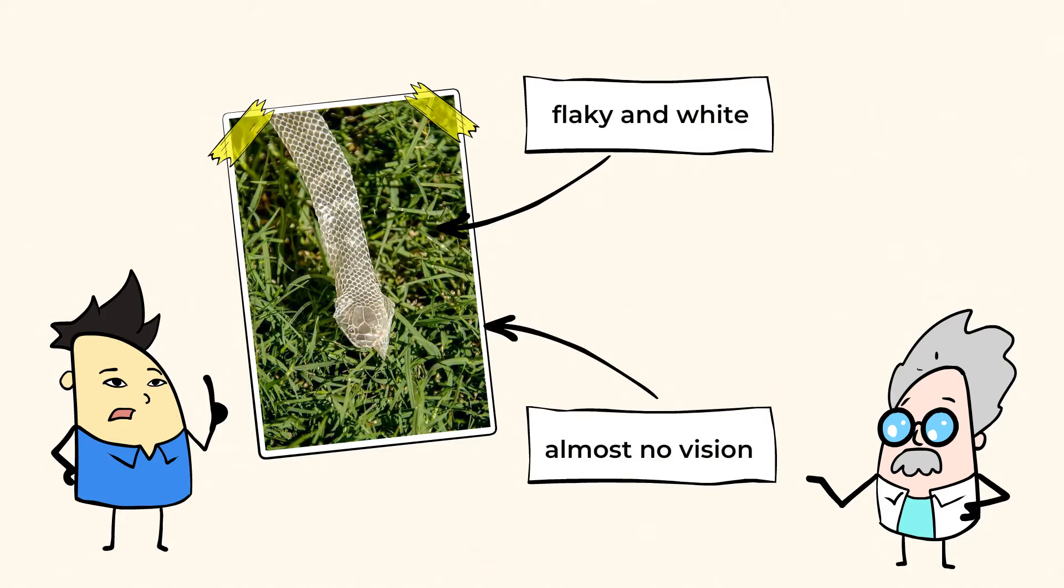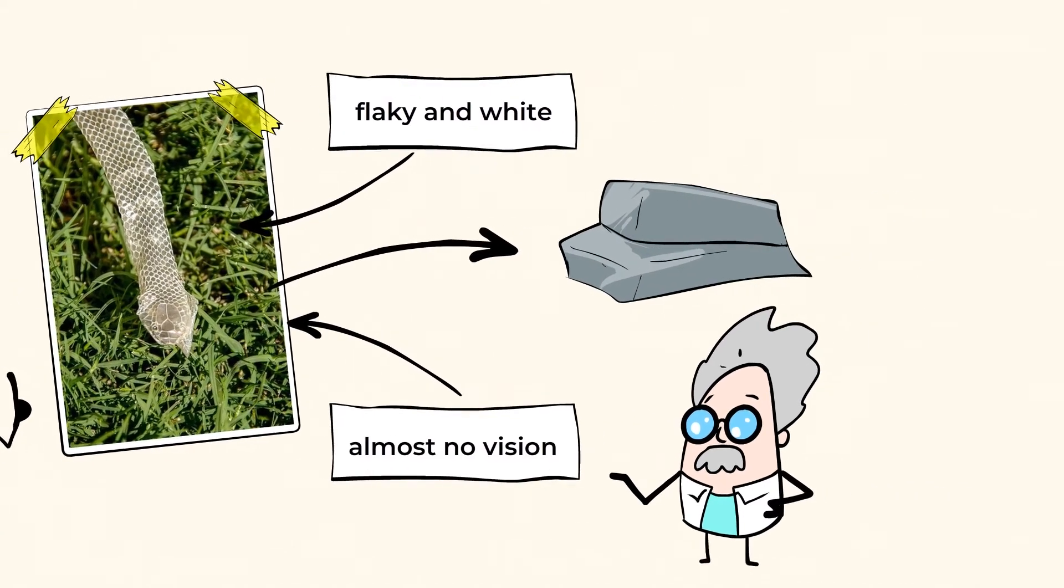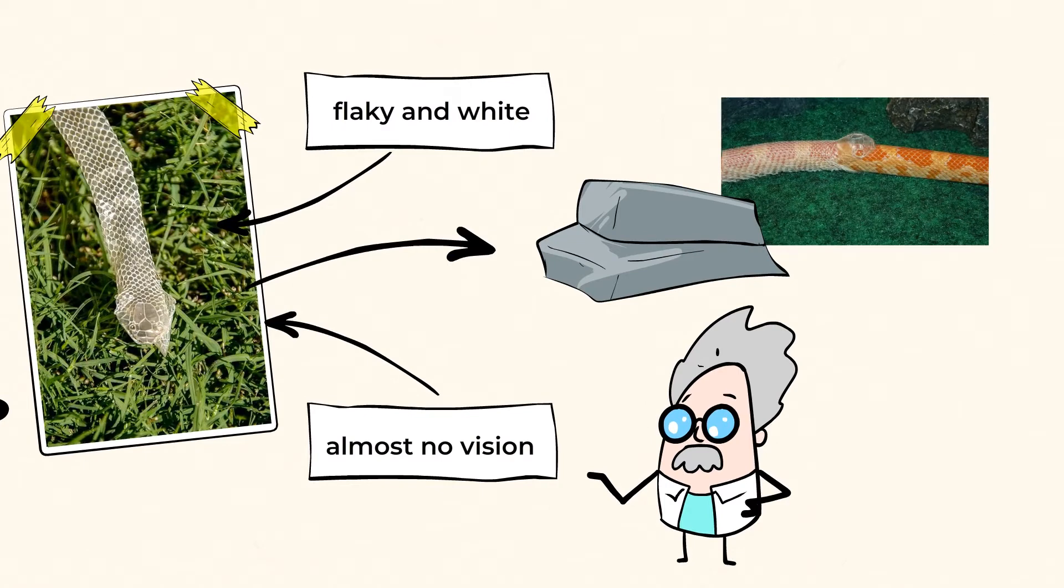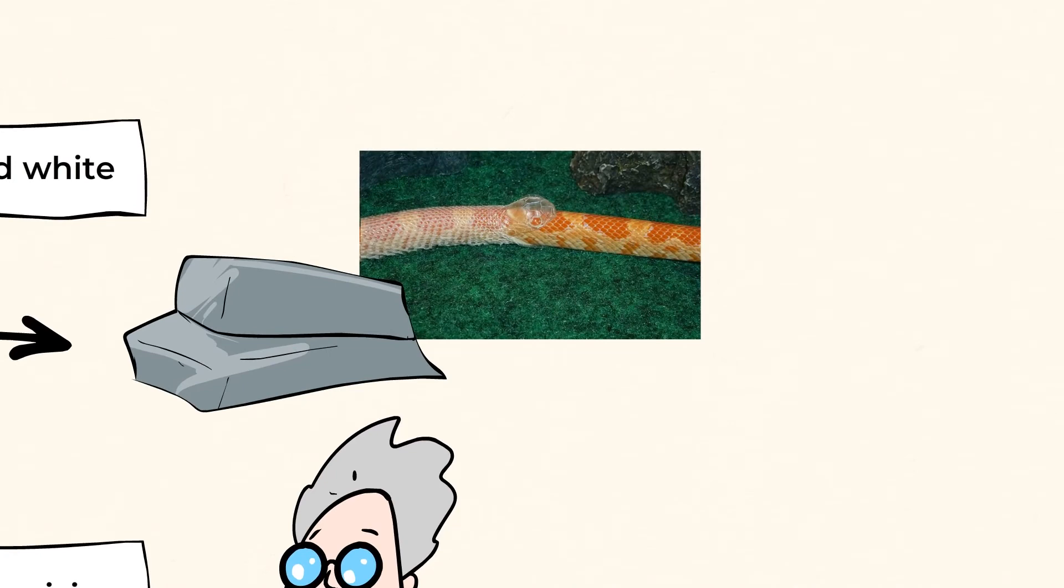But within a couple of days, the snake takes its head and rubs it on something hard like a rock. The reason they do this is to start tearing away at their old skin to open the outer layer. Cool, but gross. It works and works and rubs its head along that rock until the skin begins to tear.